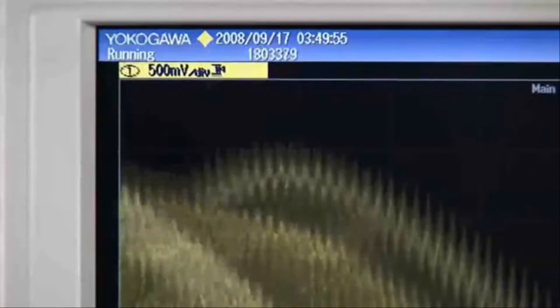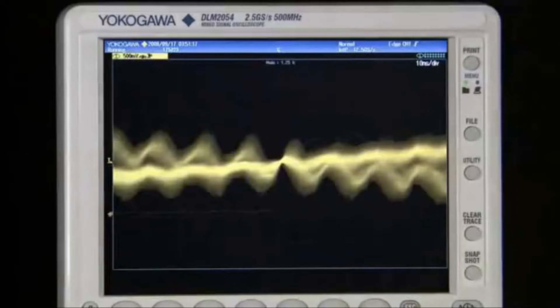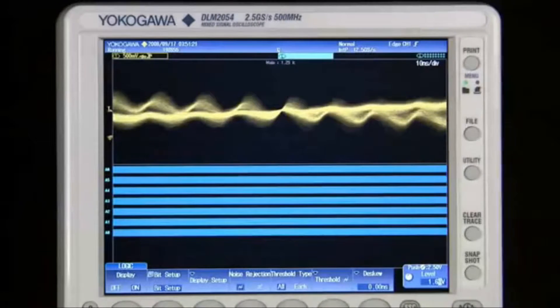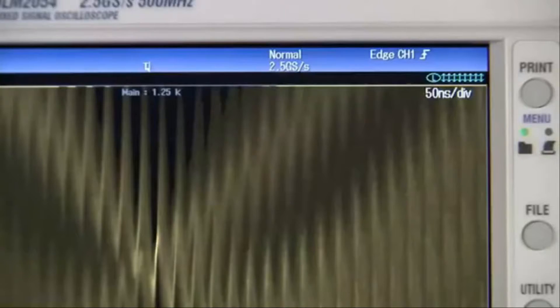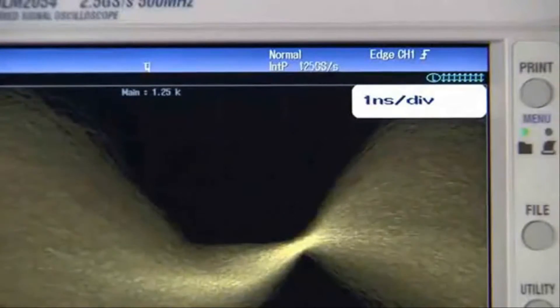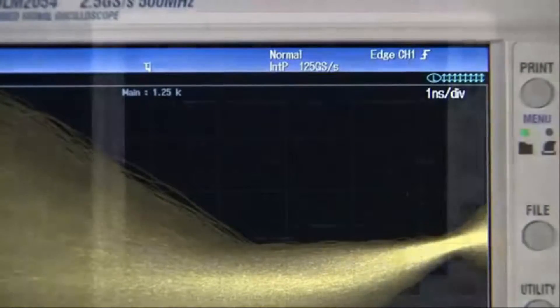Waveform update rates can affect your ability to catch intermittent glitches. The DLM2000 doesn't sacrifice update rate when using logic inputs. In fact, with acquisition rates up to 1 million waveforms per second, the DLM2000 speed is unmatched in its bandwidth range.